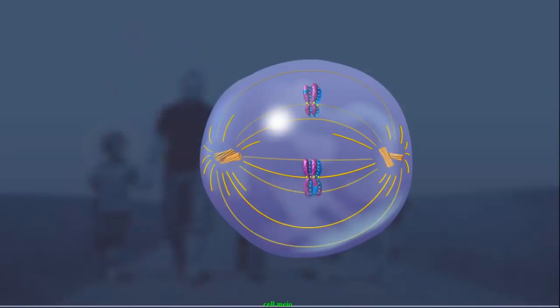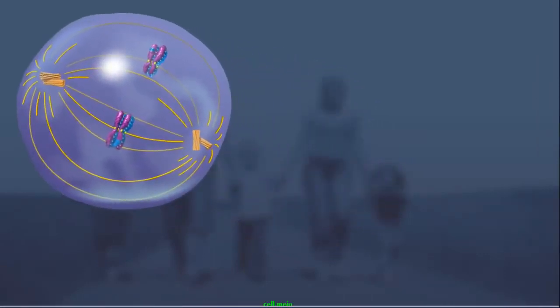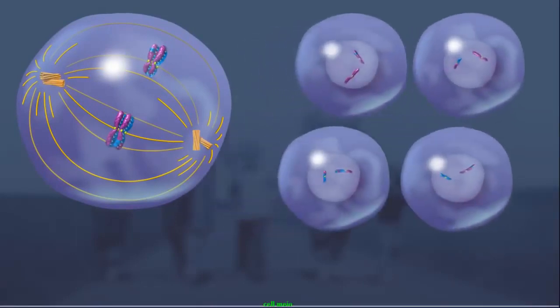In addition to crossing over, in metaphase I, the pairs of homologous chromosomes align independently along the metaphase plate, and sort independently into the daughter cells. This process, called independent assortment, produces four genetically distinct haploid gametes.